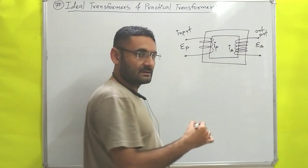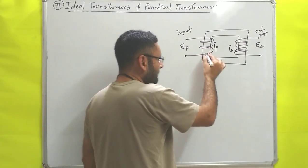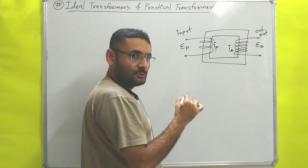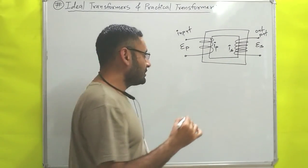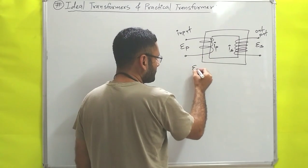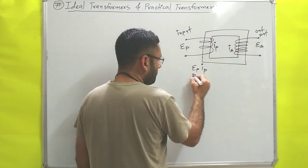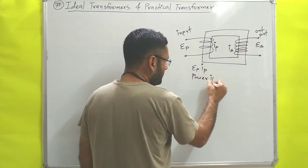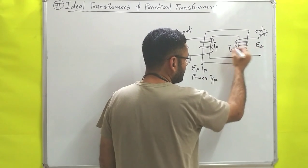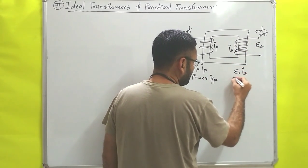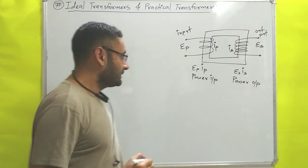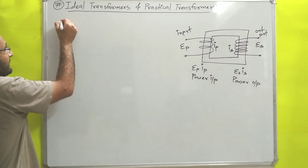The current flowing in the secondary winding is Is. So a transformer is a device which transfers power from the primary coil to the secondary coil. The power equation you know is V into I, so power at the input side is Ep into Ip, and the power on the secondary side is Es into Is — that is the power output.